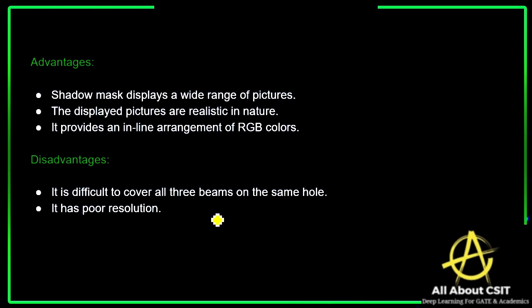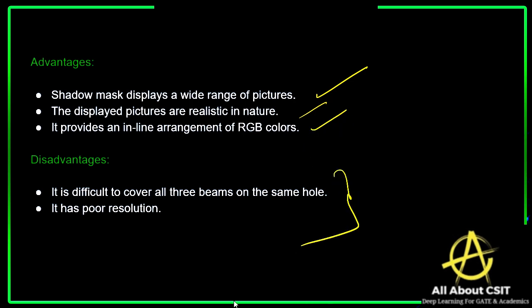The main advantages of using the shadow mask technique: it displays a wide range of pictures, whereas beam penetration generates pictures based on only four colors. The displayed pictures are realistic in nature — it produces clear, high-quality pictures that appear realistic. It also provides an inline arrangement of RGB colors.